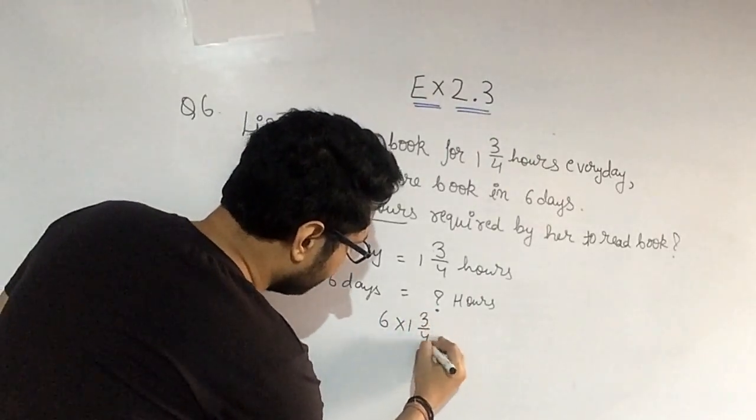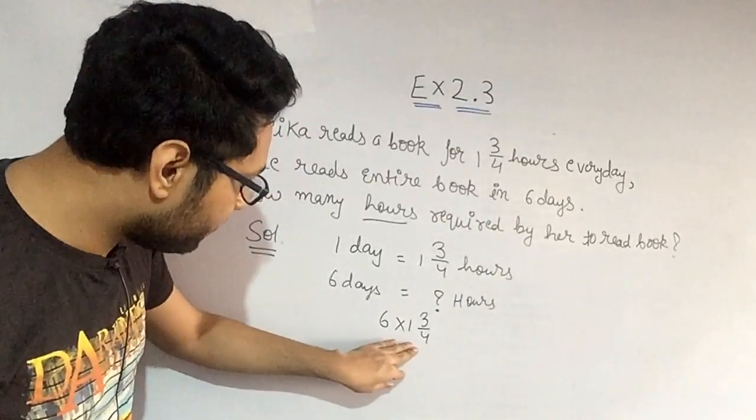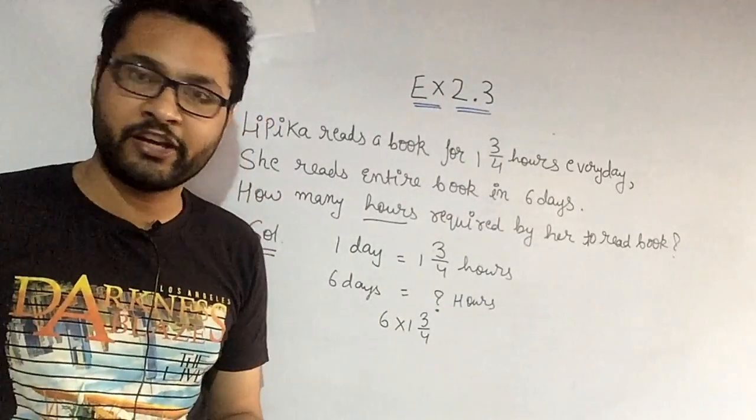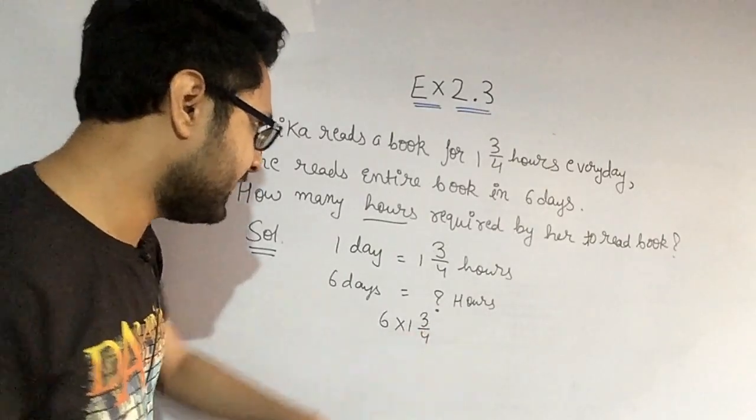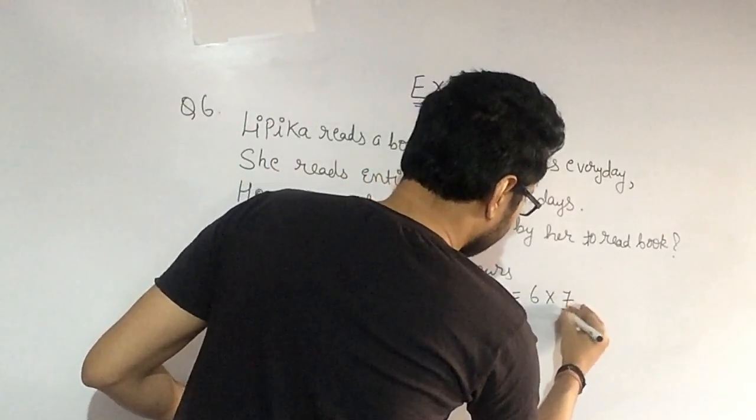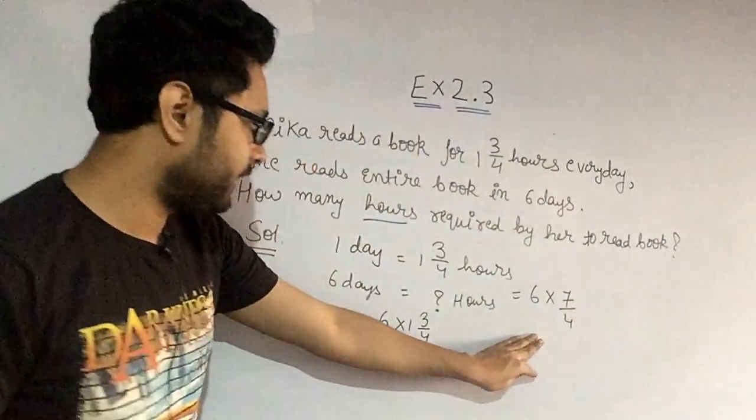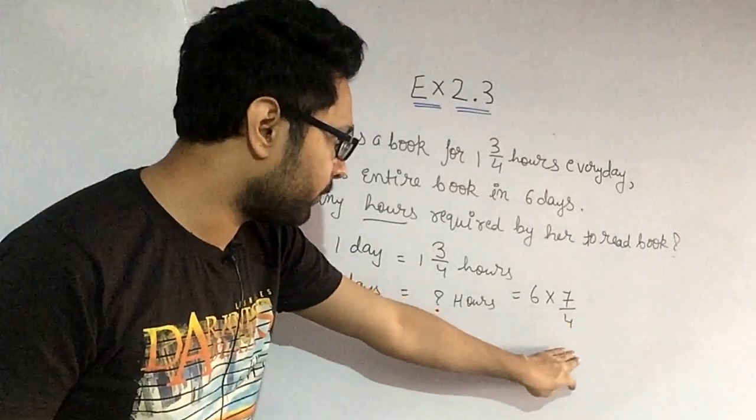Six into one, three by four. Now we are doing this multiplication. See, first this is a mixed fraction, we will convert it into what? Fraction. Four times one is four, four plus three, seven. See, I will do it here for you. Six into seven upon four. Four times one is four, and plus three, how much? Seven.